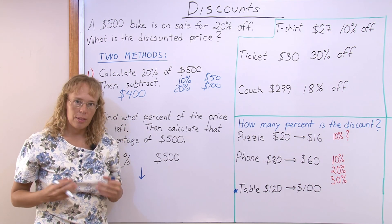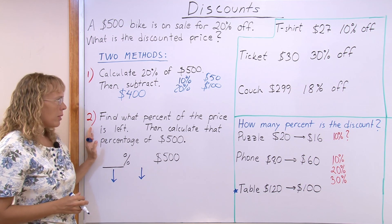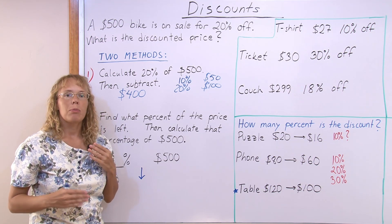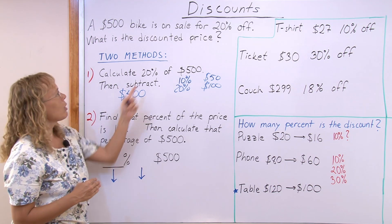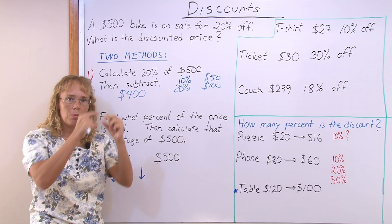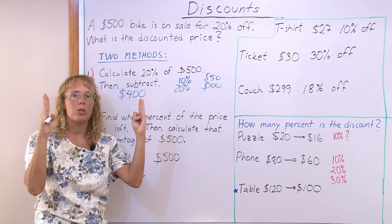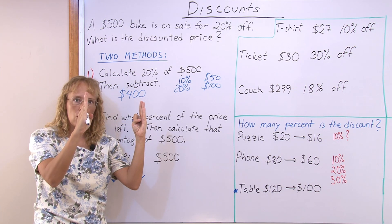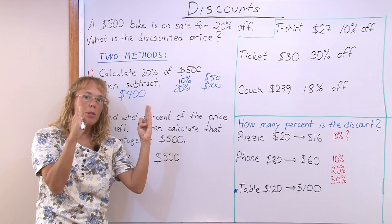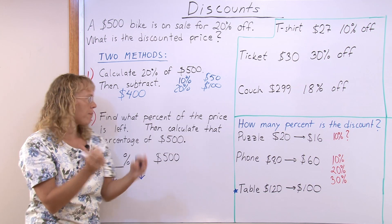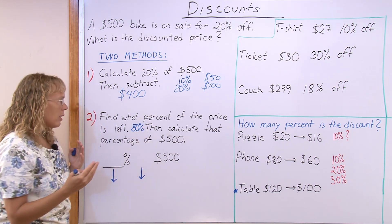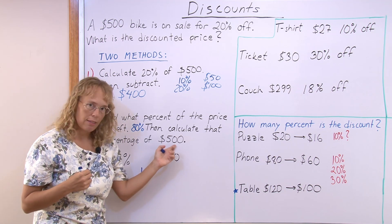Now let's look at the other method. In this method, we first find what percentage of the price will be left after 20% is taken off. Think of it this way: the total price is 100%, 20% is taken off, so how many percent is left? It's 80% of the price is left.